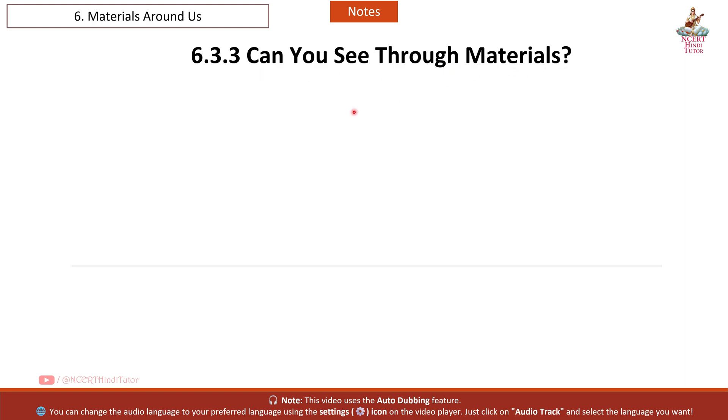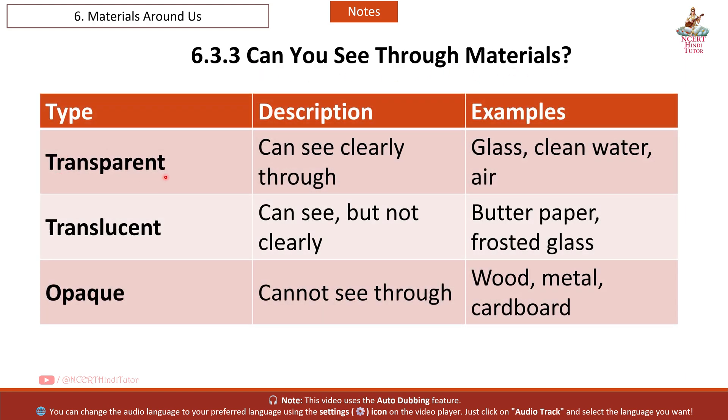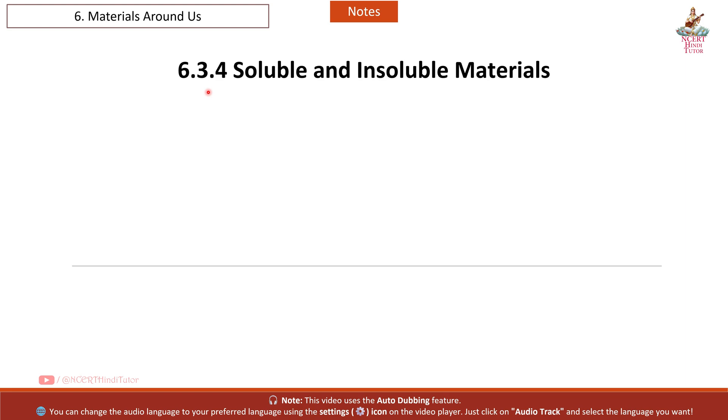6.3.3 Can you see through materials? Type: Transparent. Description: can see clearly through. Examples: glass, clean water, air. Next type: Translucent. Description: can see but not clearly. Examples: butter paper, frosted glass. Next: Opaque. Description: cannot see through. Examples: wood, metal, cardboard.